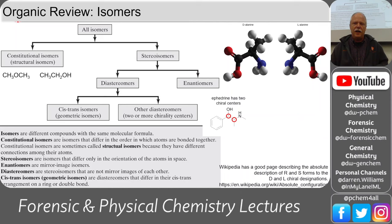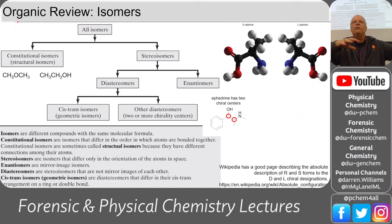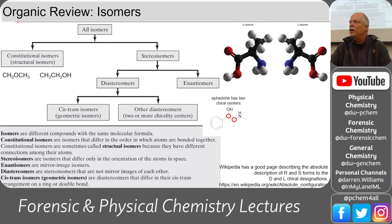One thing we can do with chemical evidence is to focus in on the different isomers, because these may differ across different formulations. This even takes into account optical isomers and enantiomers — things that have chiral centers.